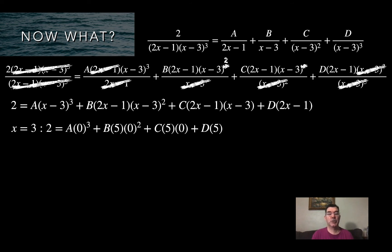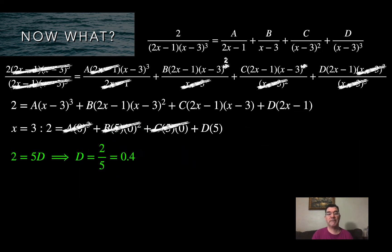I start by letting x equal 3. When that happens, the A, B, and C terms all go away because they all have x minus 3 as a factor, and x minus 3 equals 0. So I'm left with just the term containing D: 2 equals 5D, so D equals 2 fifths, which is 0.4.